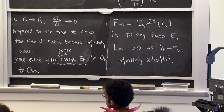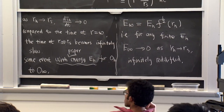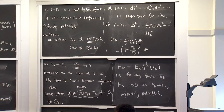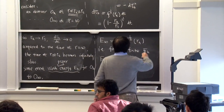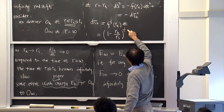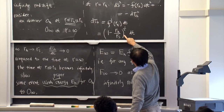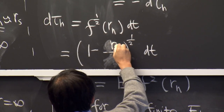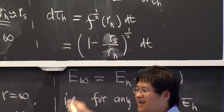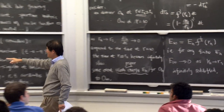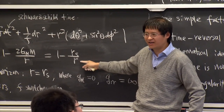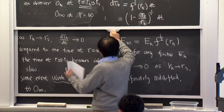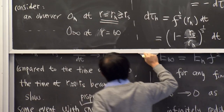A student points out a sign error: the formula should have r_H ≥ r_s (outside the horizon), not r_H ≤ r_s. Thank you — the correction is confirmed: r_s appears in the denominator, r_H is downstairs, and we always consider r_H ≥ r_s.